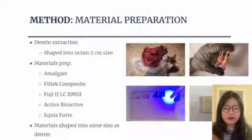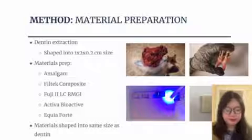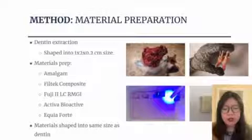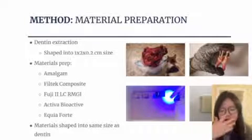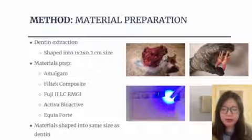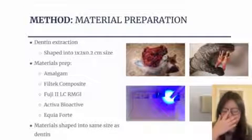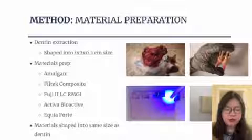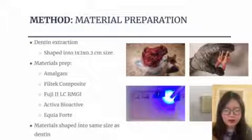For the method of my research — for the dentin extraction, I obtained a cow head used in local meat production, freshly slaughtered, and extracted its teeth, shaping them into 1 × 2 × 0.2 cm size, as shown on the lower right. For each material — amalgam, Fiotec composite, Fuji 2LC (resin-modified glass ionomer), Activa Bioactive, and Equia Forte glass ionomer — I shaped them using a custom-made mold and light setting to produce the same size as the bovine dentin.